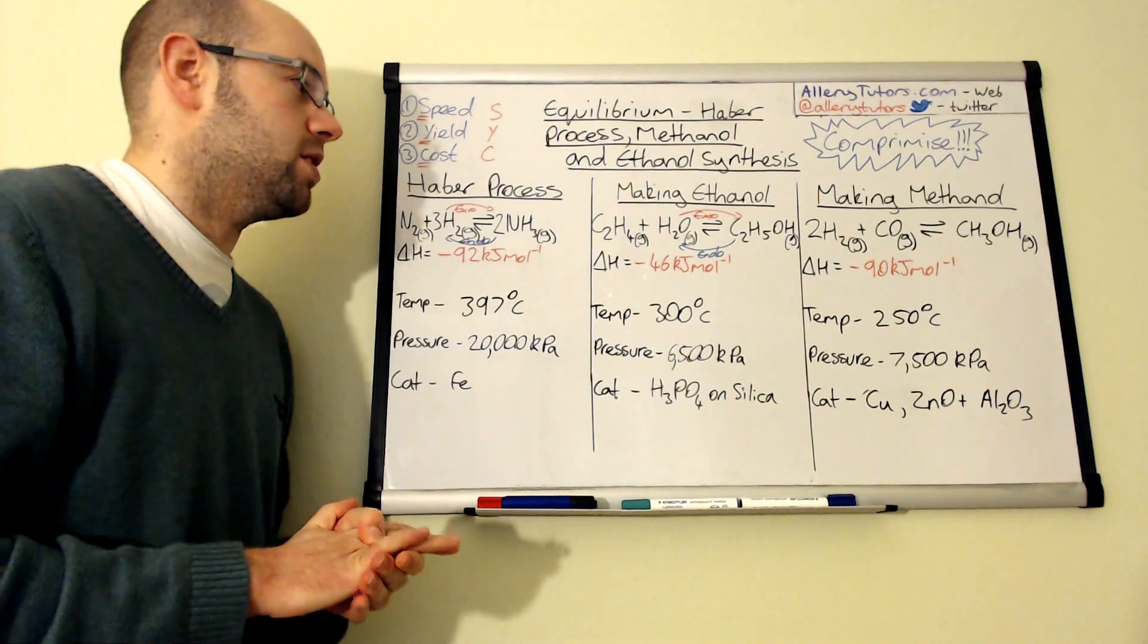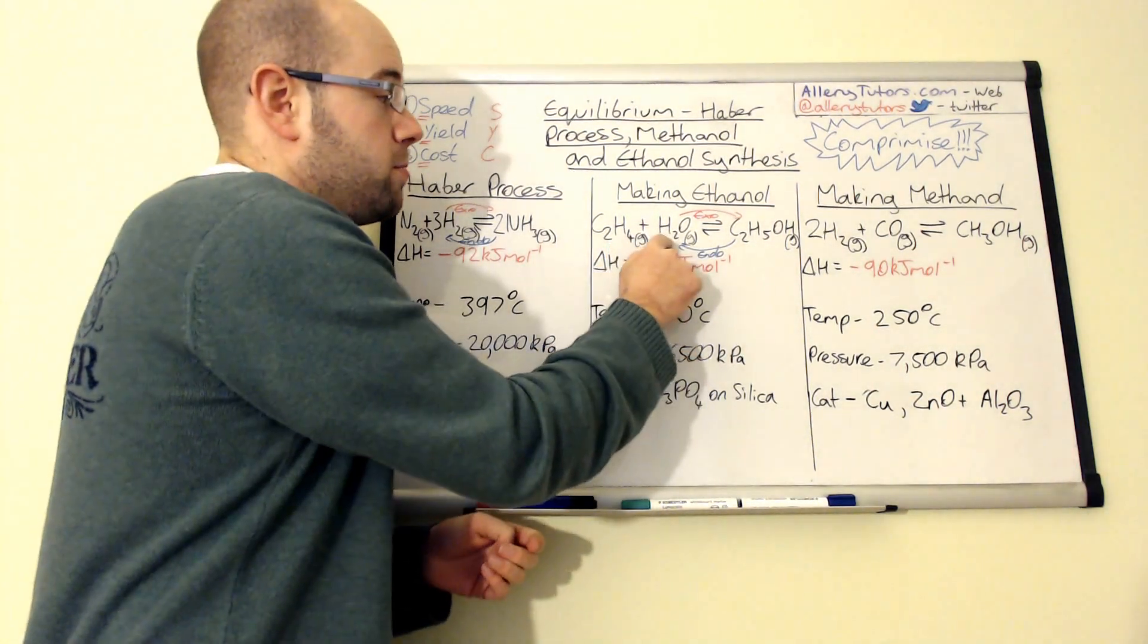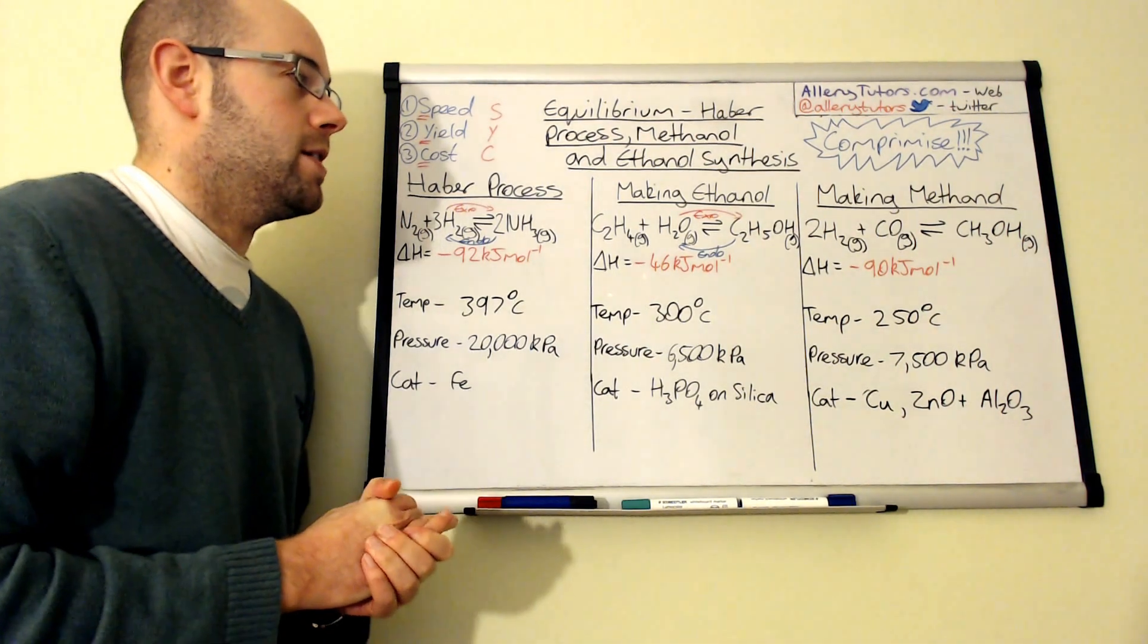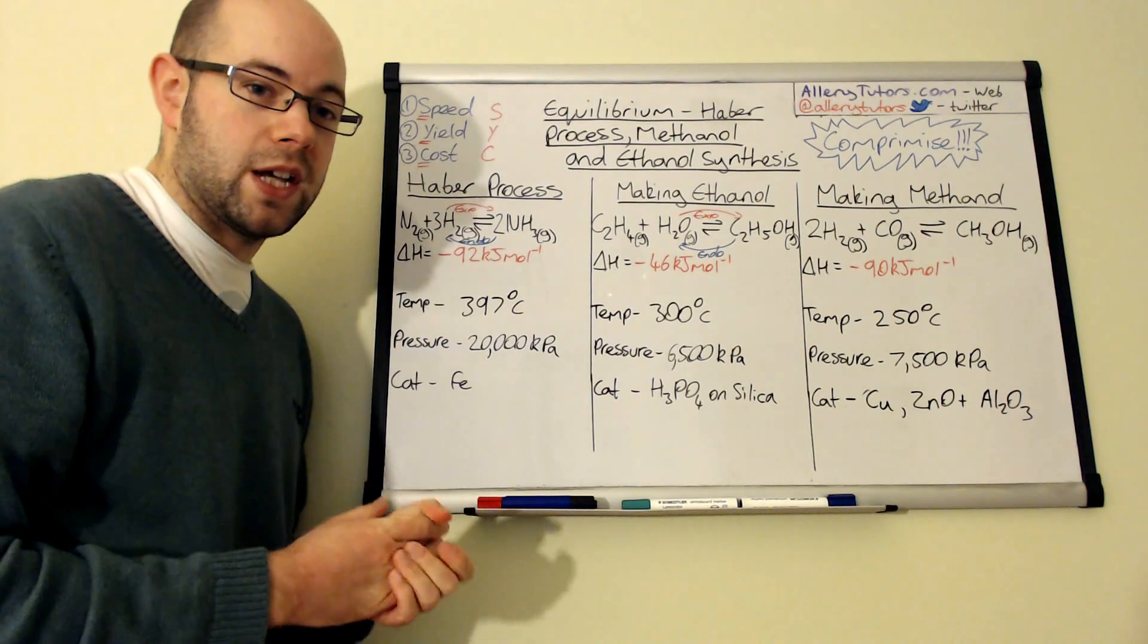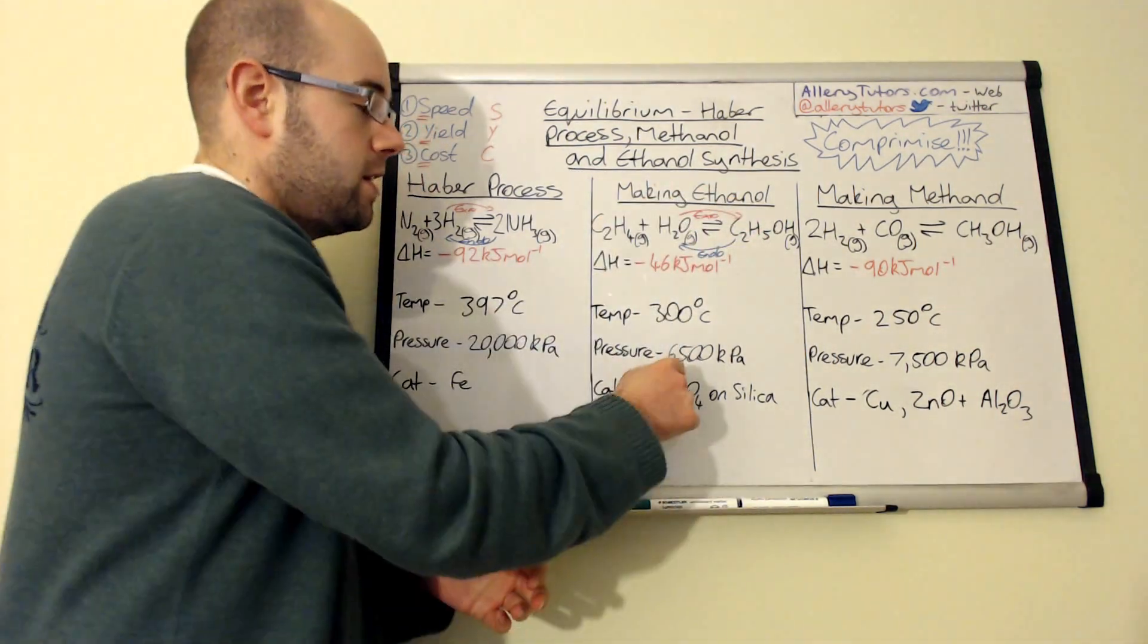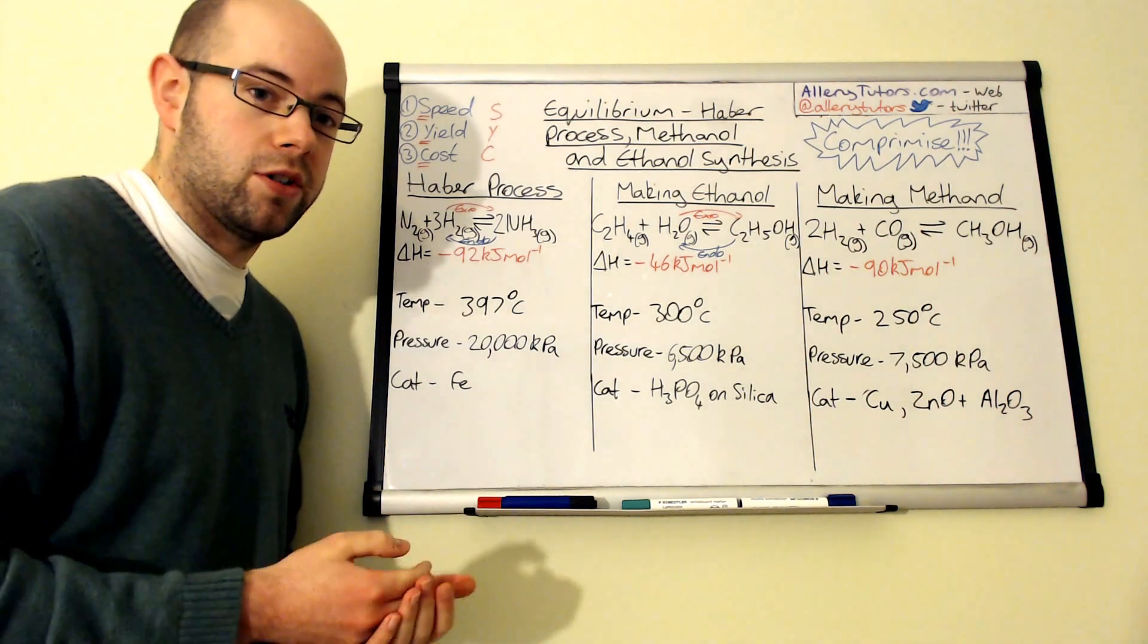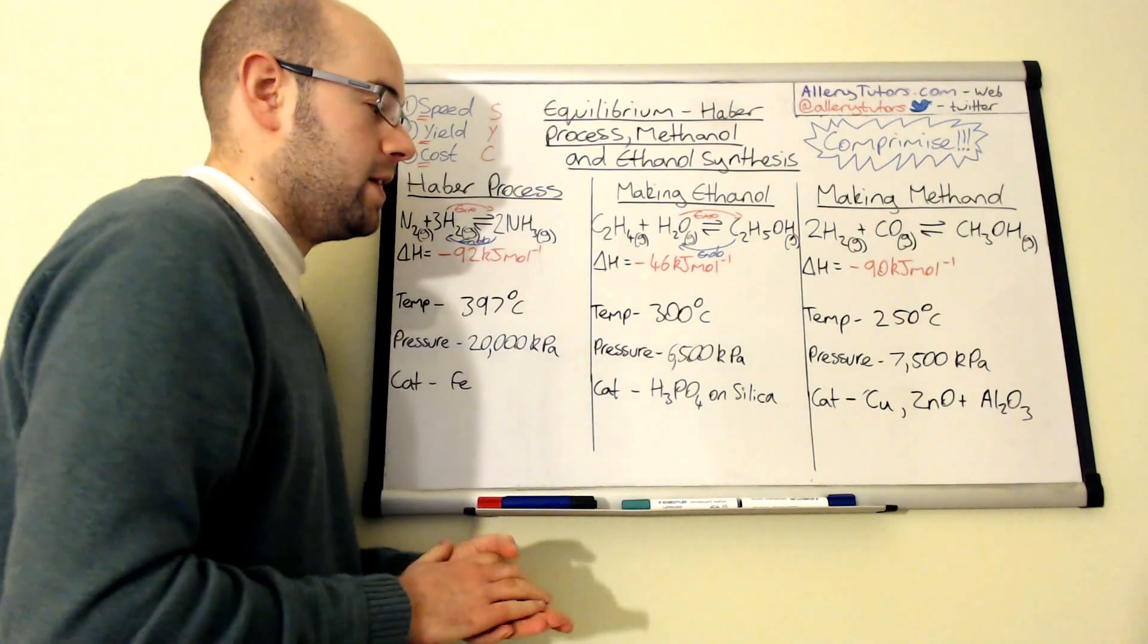The compromise temperature here is 300 degrees Celsius. We can come on to the pressure as well. You can see we've got two moles of gas on the left, one mole of gas on the right. If we increase the pressure of this reaction, then equilibrium will shift to reduce the pressure by moving to the side of the fewest gaseous moles, which in this case is on the right hand side. So the pressure, we can increase the pressure to produce more product, but again looking at the cost, high pressure costs a lot of money.